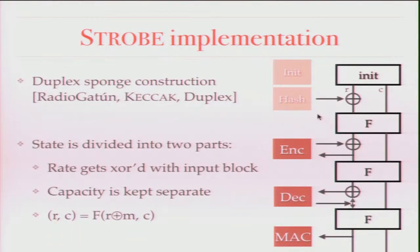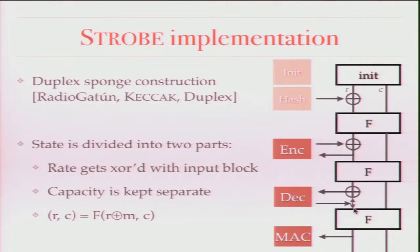If the application is providing the message, you take it from the application; otherwise you XOR in zeros. You XOR it into the state, and then you output either the input XOR the state or just the input if you're sending in the clear. Then you replace the rate variable with either R XOR M or just M in the case of decrypt. There's a simple function for whether it's M, R XOR M, and so on. This detail is in the paper.